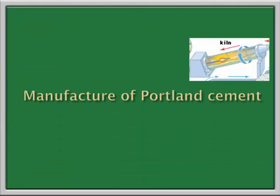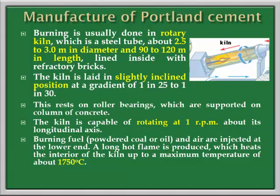Next is the rotary kiln. Burning is usually done in the rotary kiln. This is a steel tube about 2.5 to 3 meters in diameter and 90 to 120 meters in length, lined inside with refractory bricks. The kiln is laid in a slightly inclined position at a gradient of 1 in 25 to 1 in 30. It rests on roller bearings supported on columns of concrete. The kiln is capable of rotating at one revolution per minute about its longitudinal axis. The burning fuel, that is powdered coal and air, is injected at the lower end so that it produces a long flame which heats the interior of the kiln to a maximum temperature of 1750 degree Celsius.